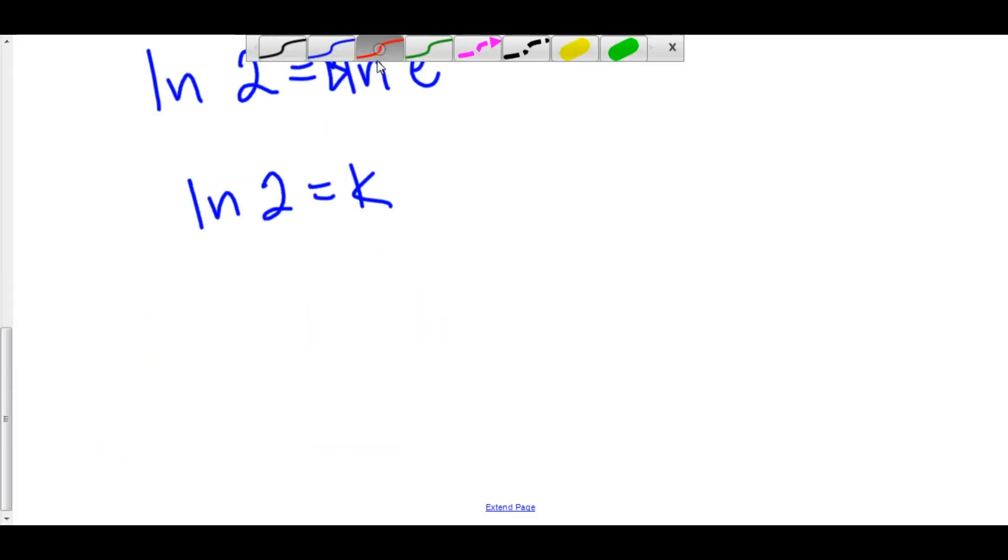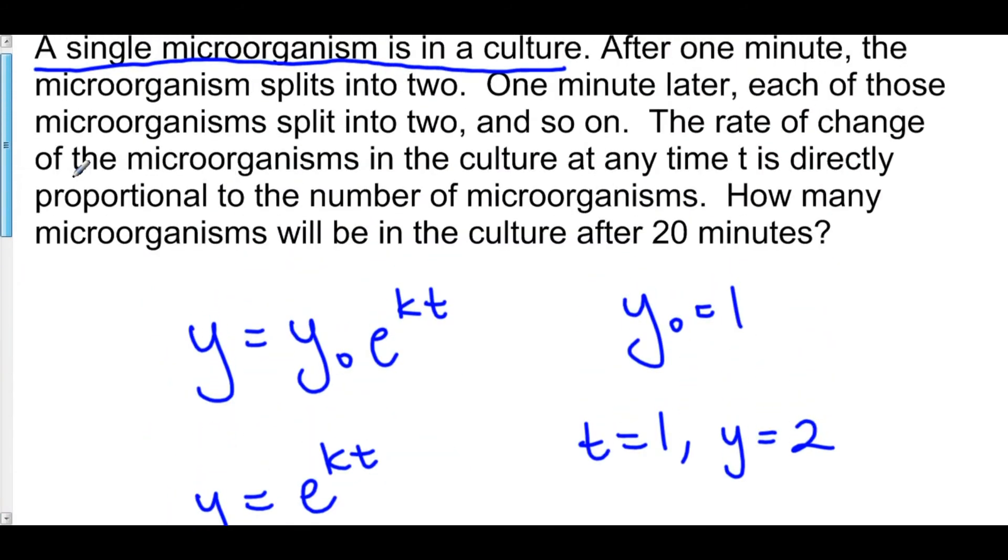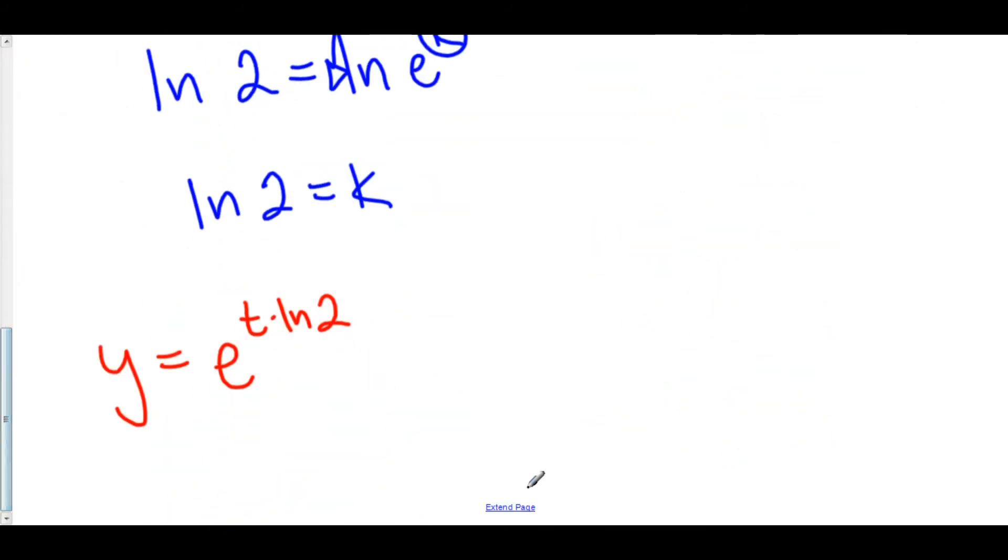So, let's plug that in. We've got y is equal to our initial function value, y naught is 1, e to the t times the natural log of 2. And at this point, we can now plug in our value of t, 20 minutes, and we'll solve for y.